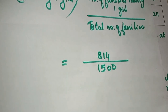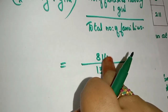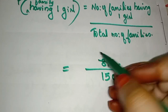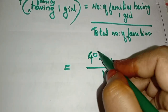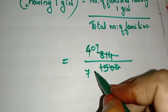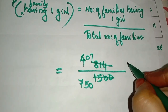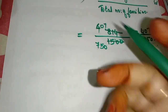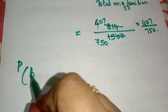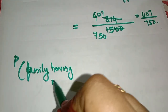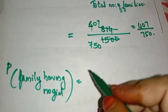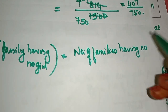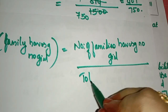814 divided by 1,500 gives 407/750. Now, for no girl: P(no girl) equals number of families having no girl divided by total number of families.